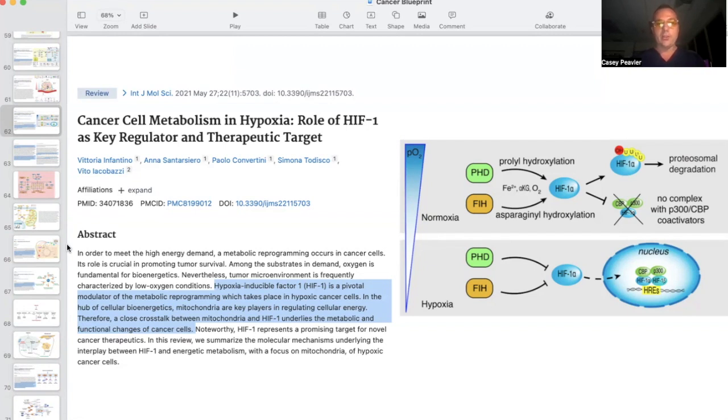Nevertheless, the tumor microenvironment is frequently characterized by low oxygen conditions, hypoxia. Hypoxia-inducible factor 1 is a pivotal modulator of the metabolic reprogramming which takes place in hypoxic cancer cells. In the hub of cellular bioenergetics, mitochondria are key players in regulating cellular energy. Therefore, a close crosstalk between mitochondria and HIF-1 underlies the metabolic and functional changes in cancer cells. Noteworthy, HIF-1 represents a promising target for novel cancer therapeutics. In this review, we summarize the molecular mechanisms underlying the interplay between HIF-1 and energetic metabolism, with a focus on mitochondria of hypoxic cancer cells.